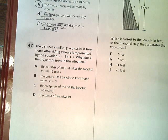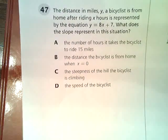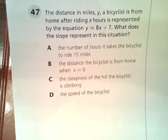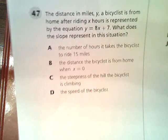This is the Tennessee Intercourse Practice Test for Algebra 1, question number 47. The distance in miles a bicyclist is from home after riding x hours is represented by the equation y = 8x + 7. What does the slope represent in this situation?